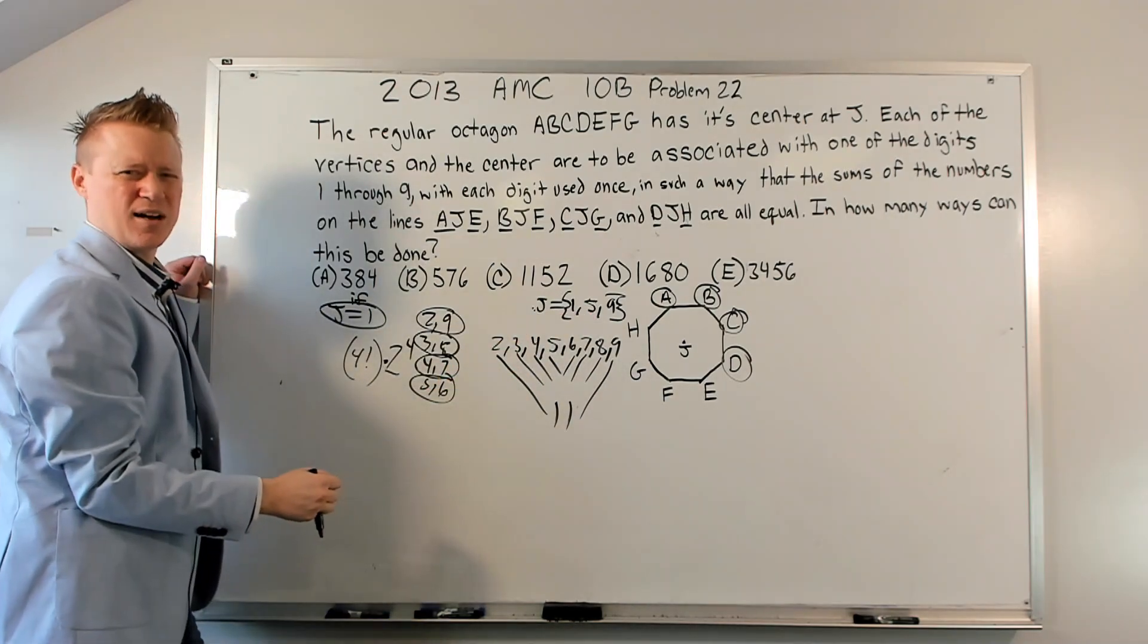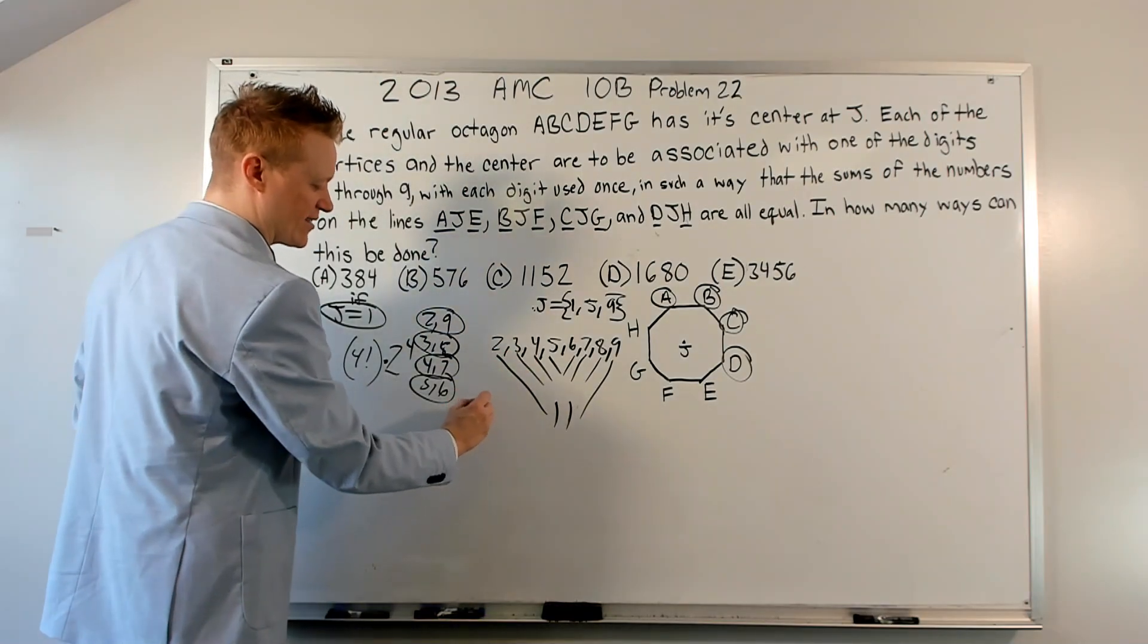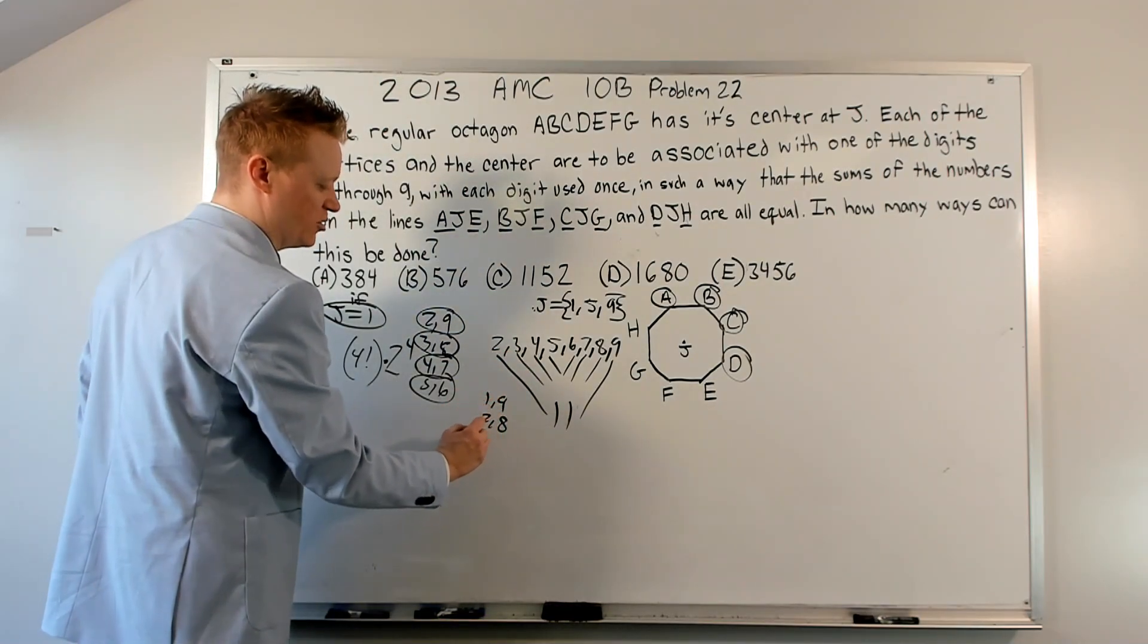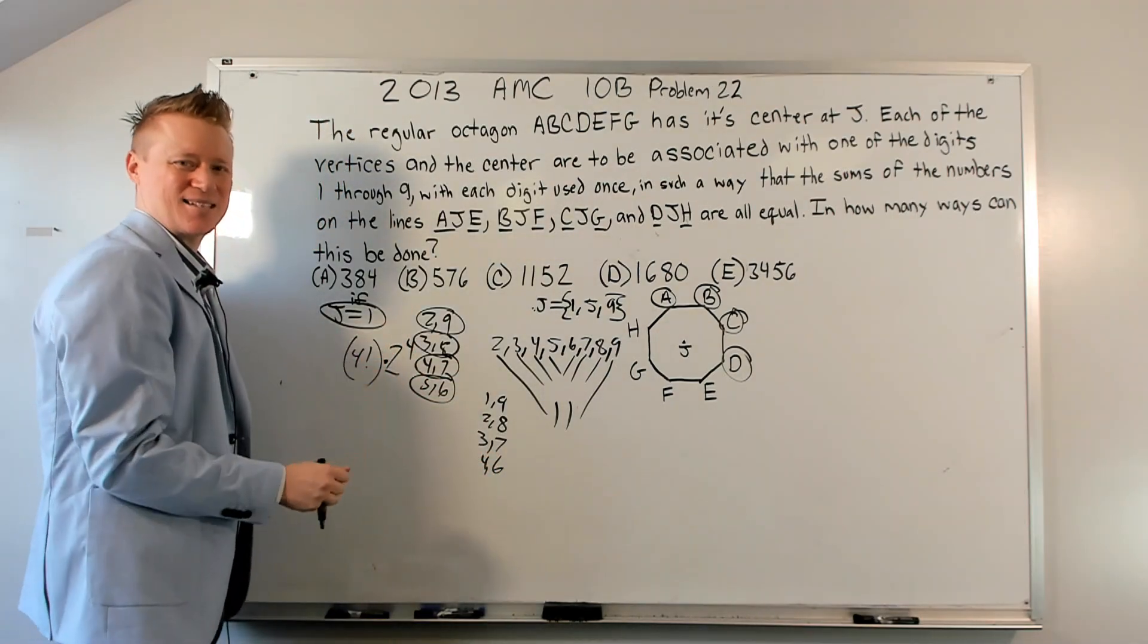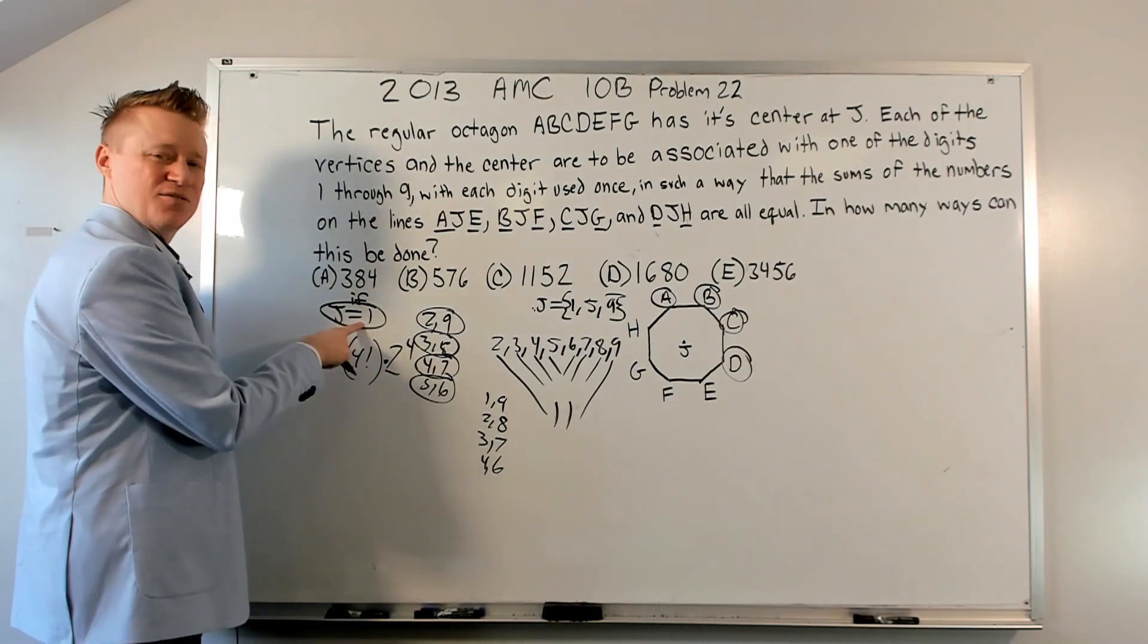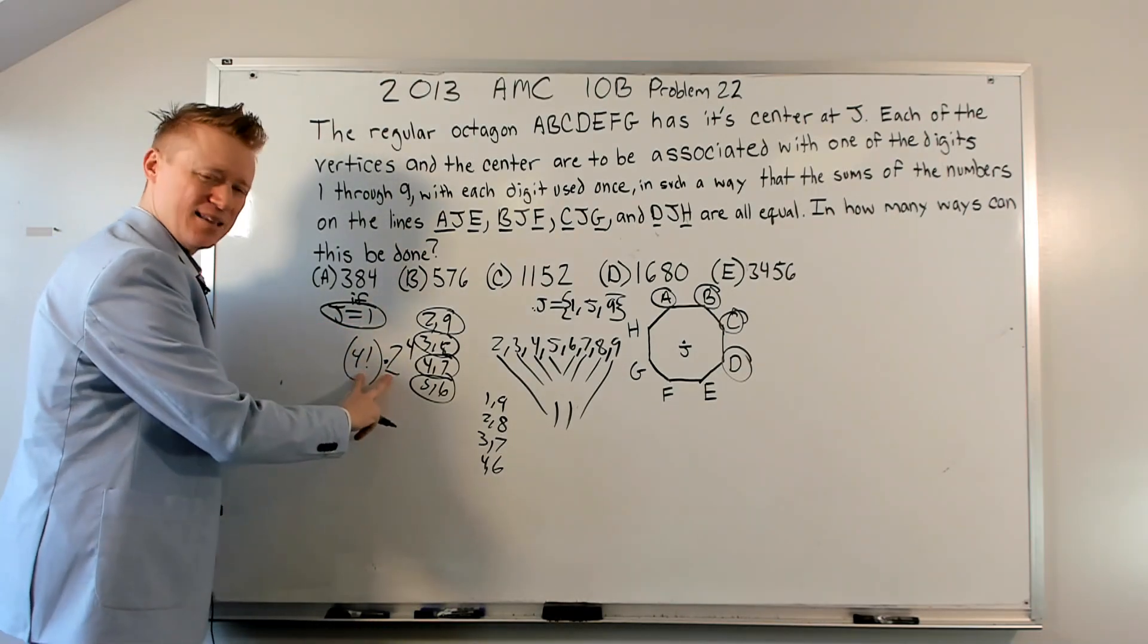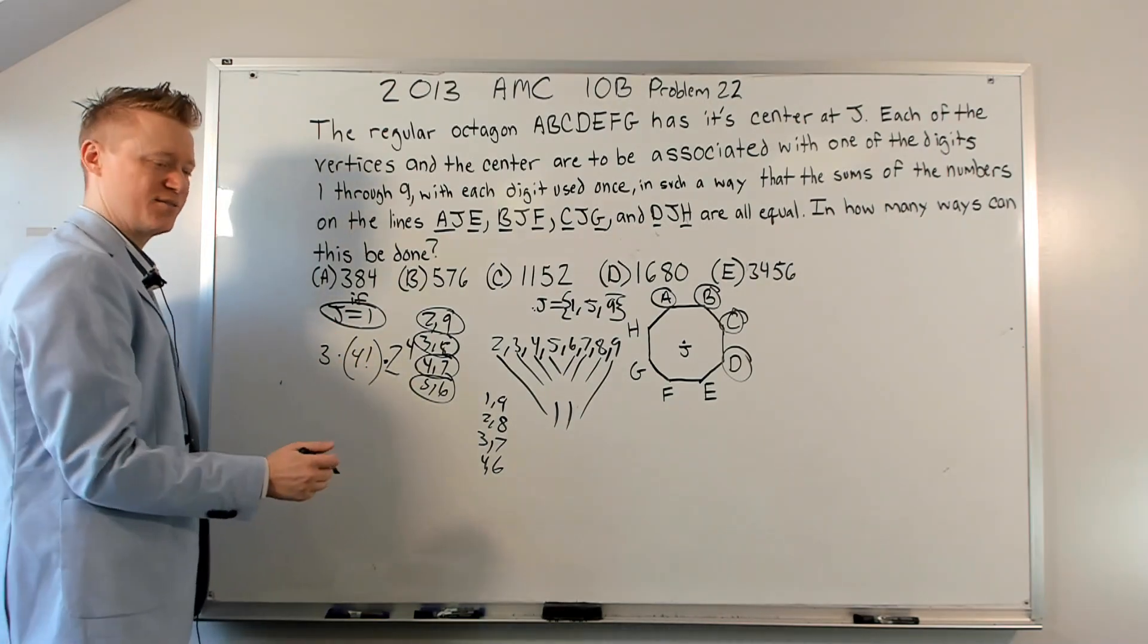What happens if J equals 5? You should be able to see it's going to work exactly the same way, except you'd have 1 with 9, 2 with 8, 3 with 7, and 4 with 6. That's the exact same thing. You're again going to have this. So basically, for each of the choices of J, I get this, which means I can just multiply three times all of this.